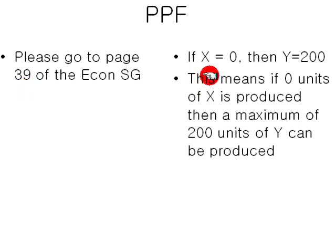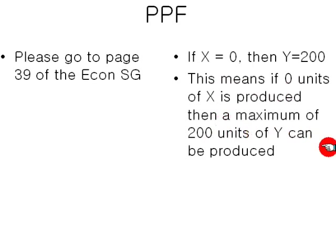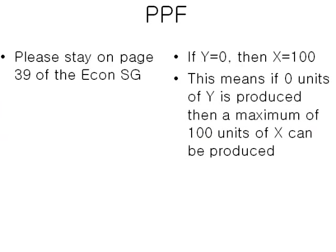According to the chart, if X equals 0, then Y equals 200. That means if 0 units of X is produced, then the maximum of 200 units of Y can be produced. So it's not necessarily that 200 can be produced — it's the maximum of 200 that can be produced. Now, they also say if Y equals 0, then X equals 100. So this means that if 0 units of Y is produced, then the maximum of 100 units of X can be produced. Very simple concept.